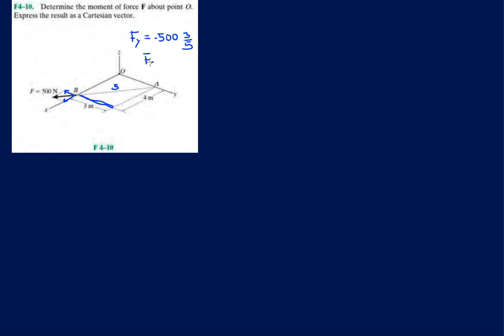What about Fx? Well, let's see what side of this 3-4-5 triangle is parallel to the x axis. It's this side, so we have our 500, the magnitude, and then times 4 over 5.